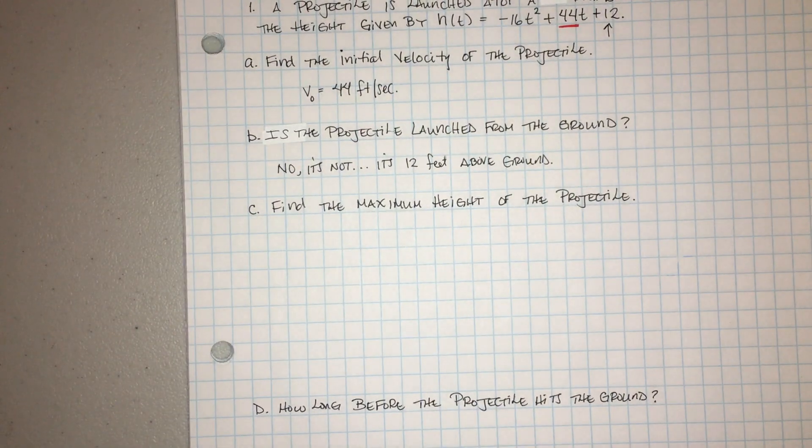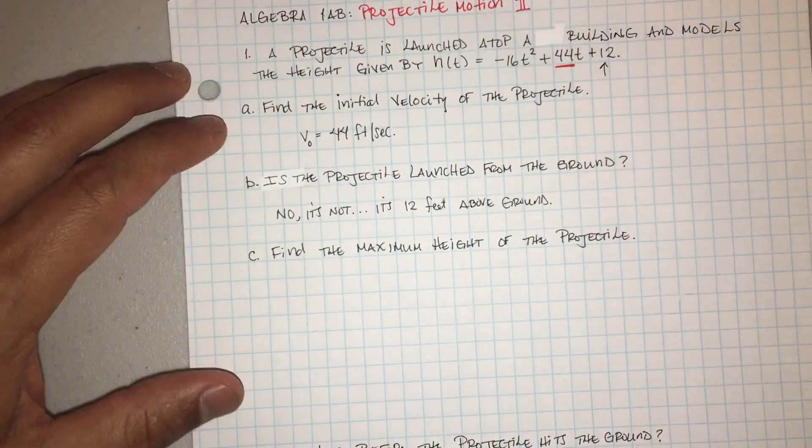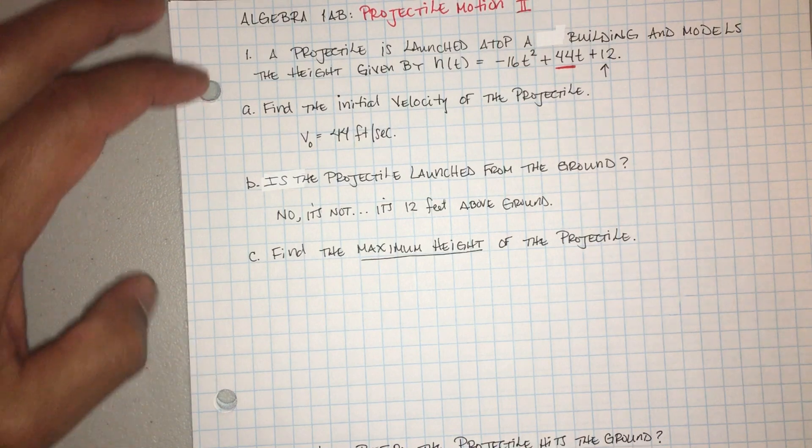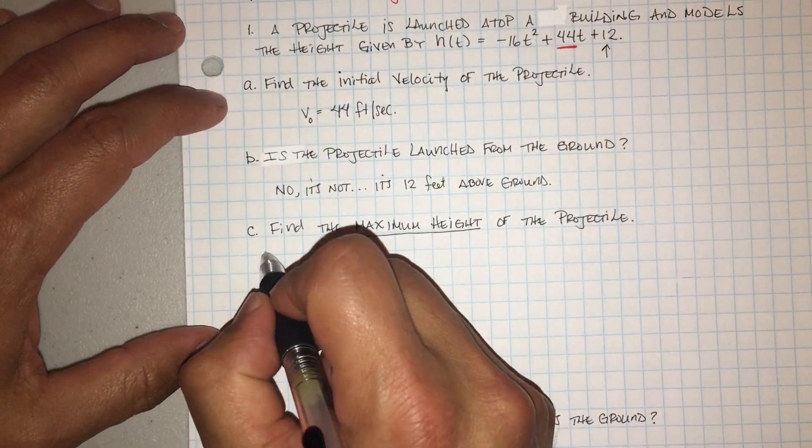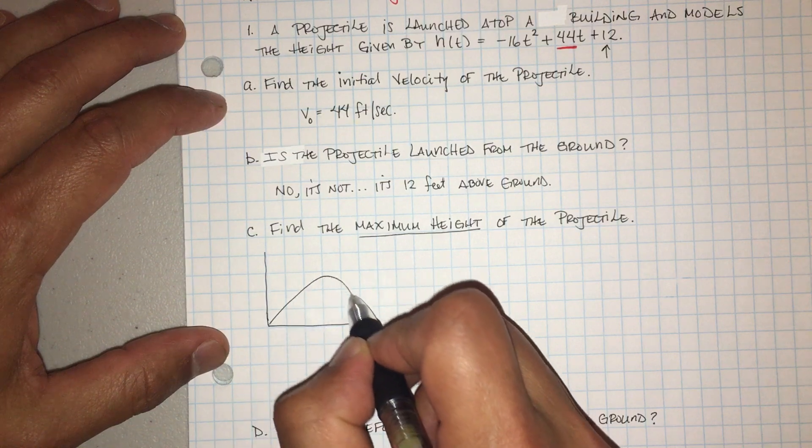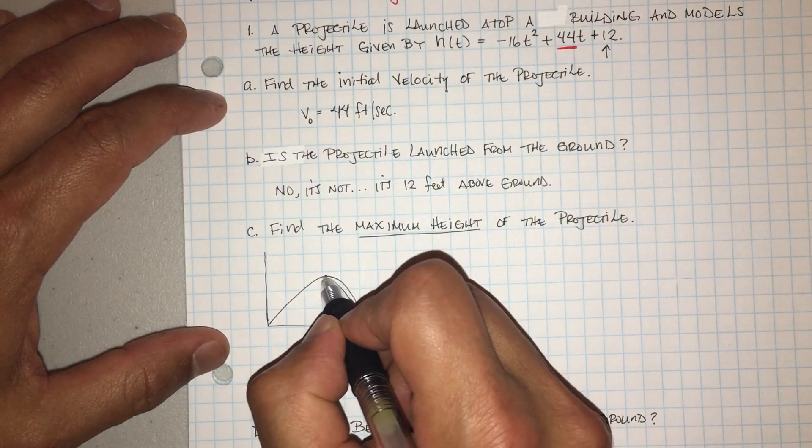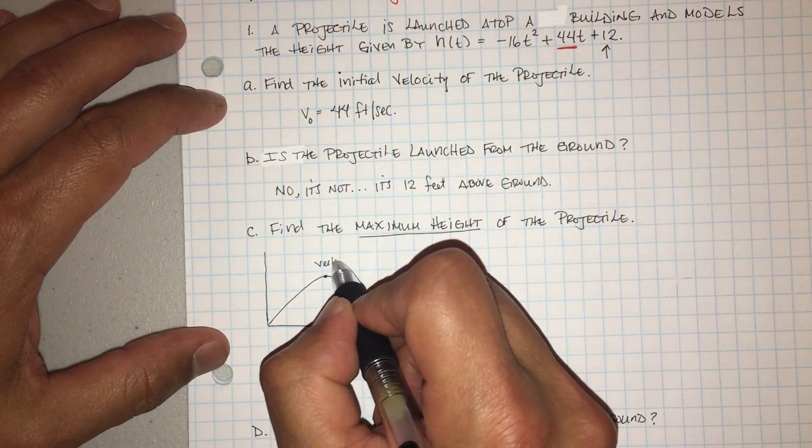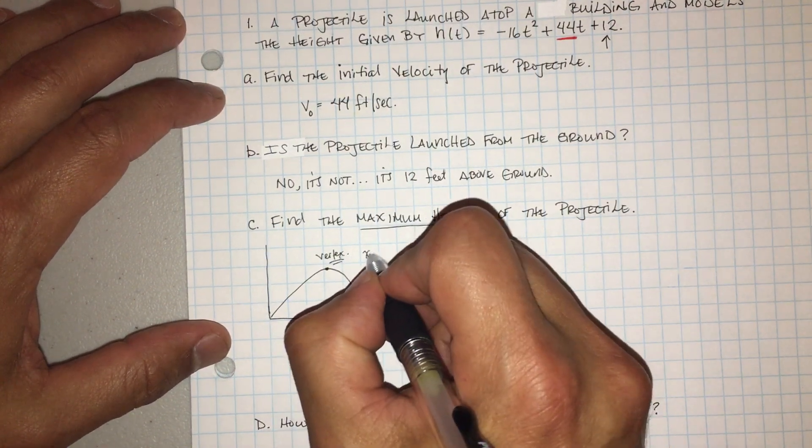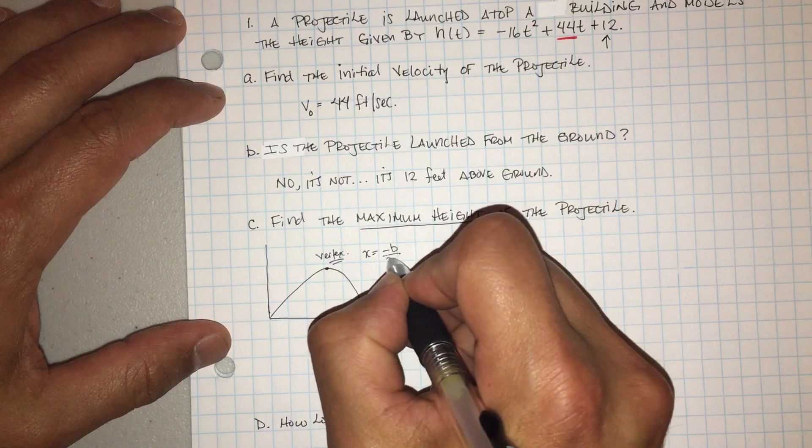Okay, and then let's go ahead and find c. Find the maximum height of the projectile. Entonces tenemos que encontrar la altura máxima. Now remember, we talked about this earlier. Now when you have a projectile, you do that, it goes up and then it goes down, and the max height is right here. We call that the vertex. Okay, now one of the ways to find the vertex is this equation called x equals negative b over 2a.